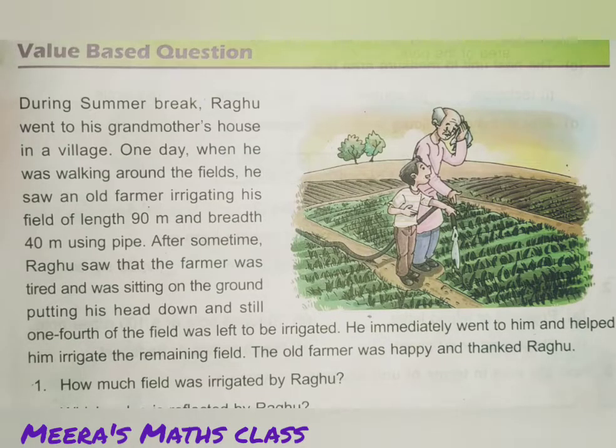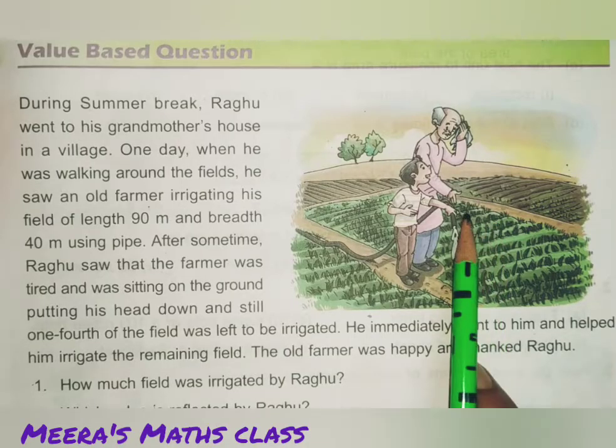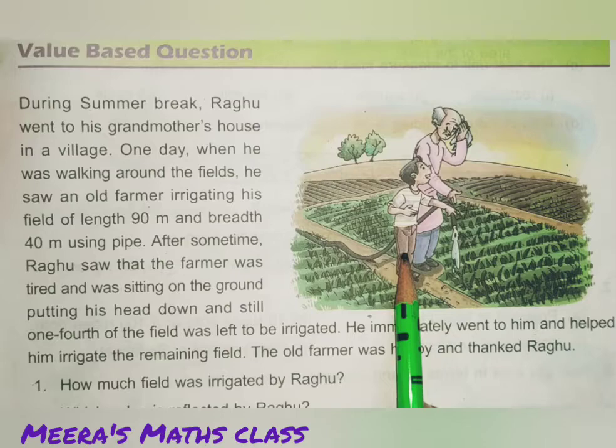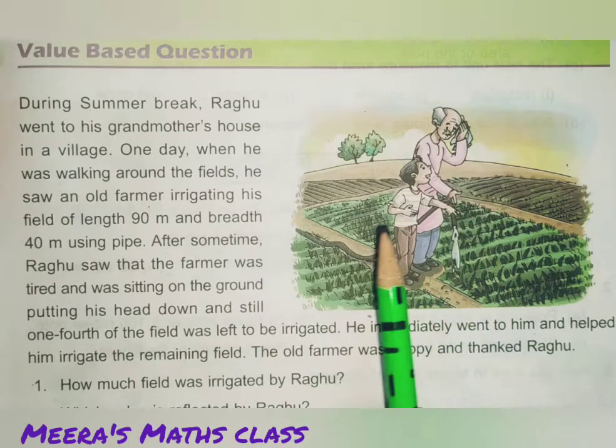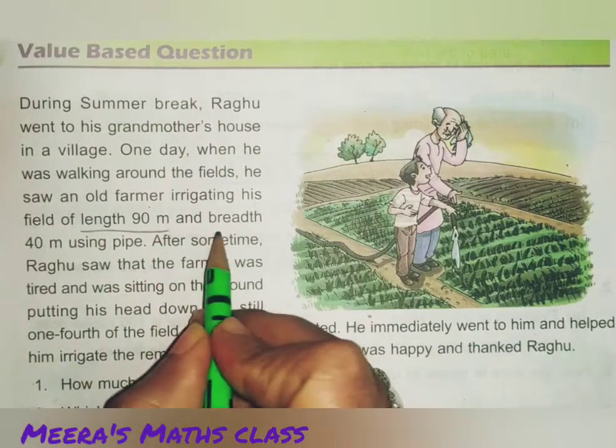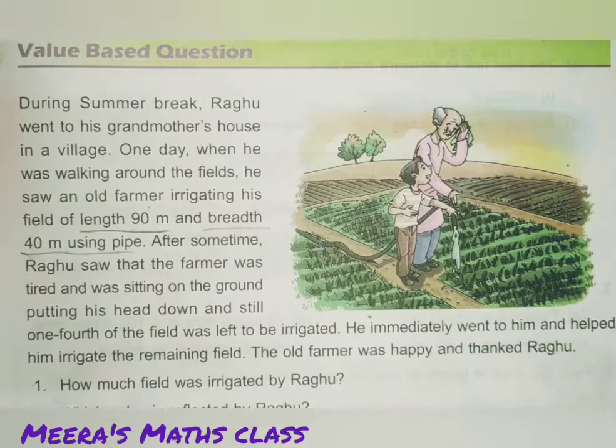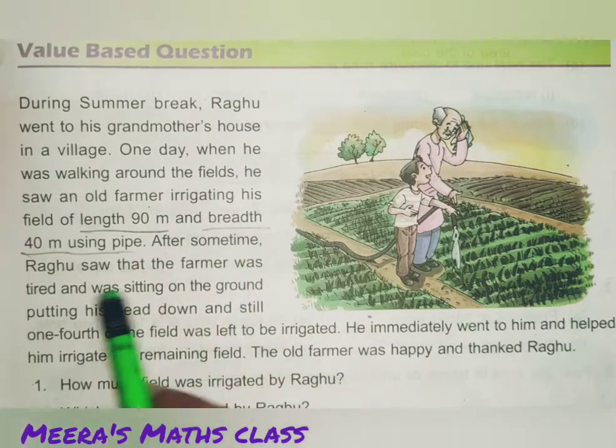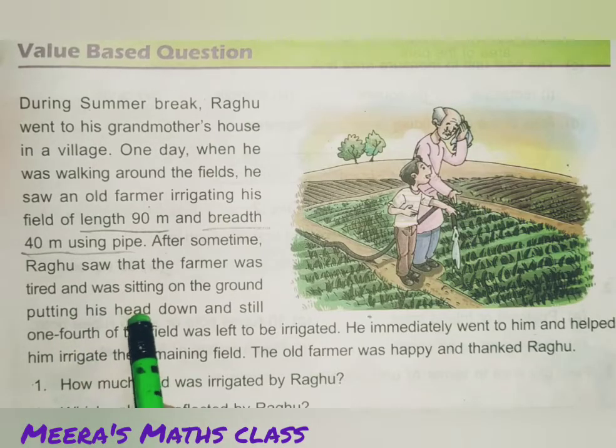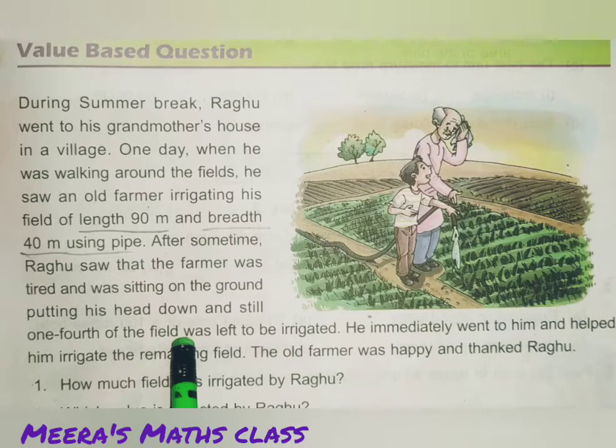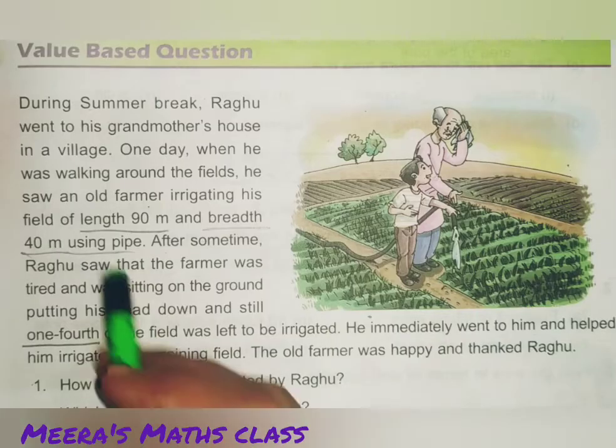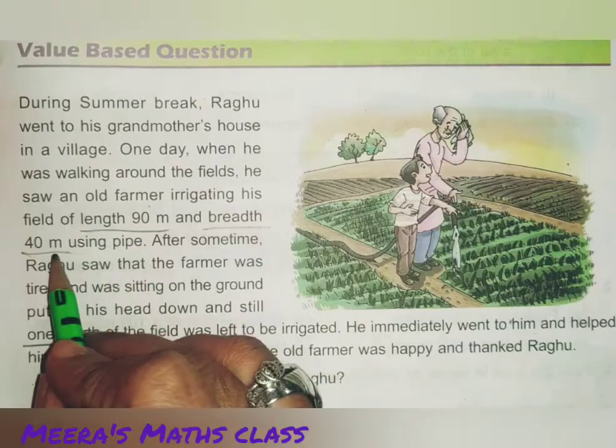During summer break, Raghu went to his grandmother's house in a village. One day, when he was walking around the fields, he saw an old farmer irrigating his field of length 90 meter and breadth 40 meter using pipe. After some time, Raghu saw that the farmer was tired and was sitting on the ground. Raghu was putting his head down and still one-fourth of the field was left to be irrigated. Underline the important points. Length is equal to 90 meter and breadth is equal to 40 meter.